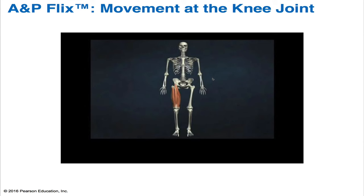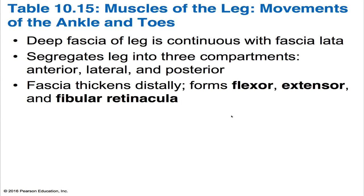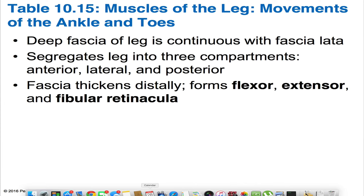Now we're moving on to the movements of the ankle and toes. The deep fascia of the leg is continuous with the fascia lata that ensheathed the thigh. Like a snug knee sock, the leg fascia binds the leg muscles tightly, preventing excessive swelling during exercise and aiding venous return. Its inward extensions segregate the leg muscles into anterior, lateral, and posterior compartments, each with its own nerve and blood supply. Distally, the leg fascia thickens to form the flexor, extensor, and fibular retinacula — the ankle brackets that hold the tendons in place as they run to the foot.